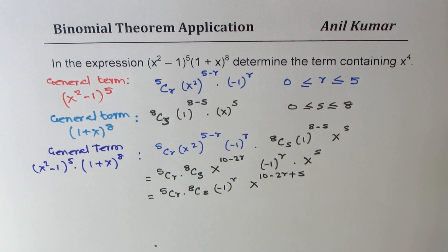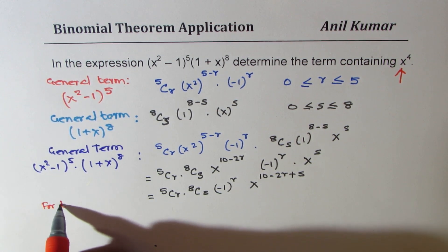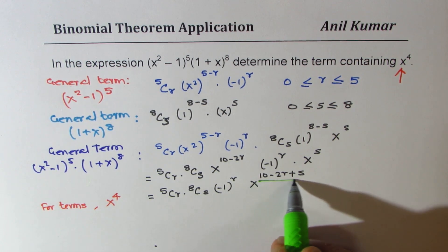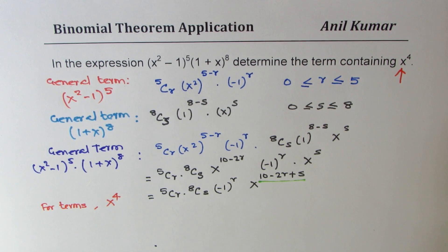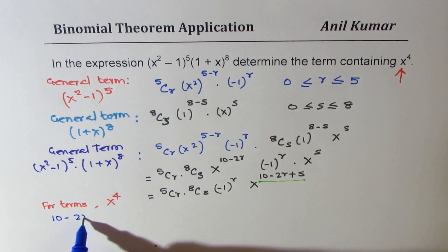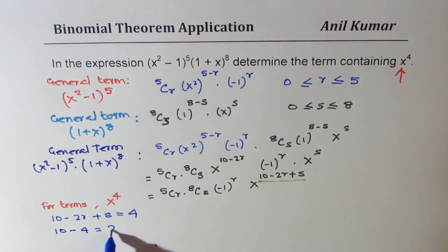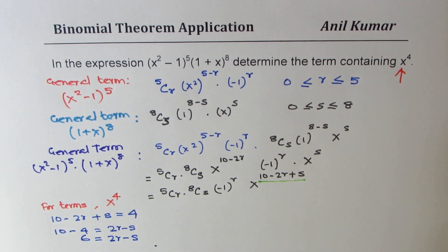We need the term containing x to the power of 4. So we equate the exponent to 4: 10 - 2r + s = 4. Solving this gives 10 - 4 = 2r - s, or 6 = 2r - s. We now have an equation relating r and s.